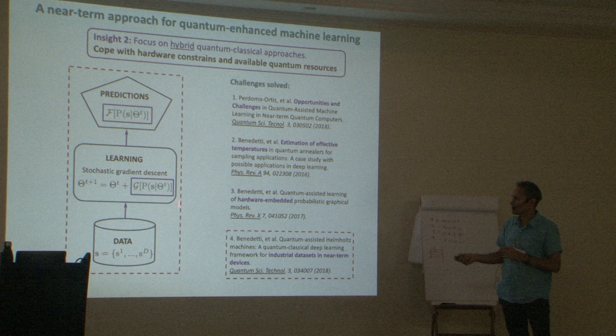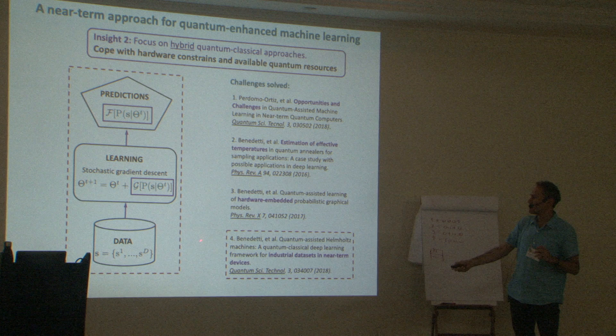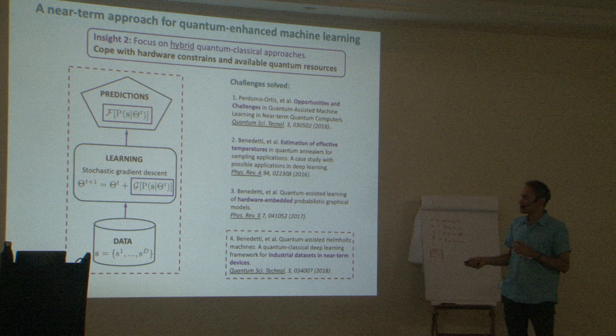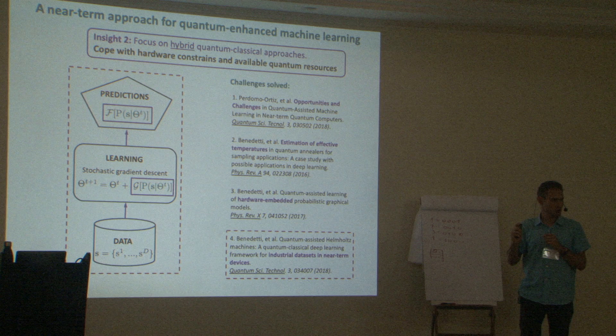Notice now my quantum box — my quantum speed-up box, or potential quantum speed-up box — now goes here. The reason is that at the end of the day, in some way, I'm having a quantum representation of the data indirectly, with the trick that I'm about to show you, without actually resorting to having a quantum memory or anything like that.